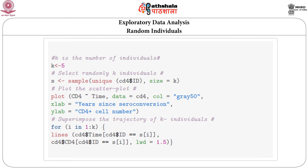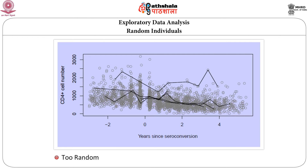A better way is to randomly plot a few individuals. We can specify k, the number of individuals — I have set k equal to 5 — and choose k random samples from the CD4 data, plot the entire dataset, and superimpose the k individuals' trajectories. However, the problem is that since these are k random individuals, the coverage of the total area might not be good. For example, data may exist in regions where the selected individuals do not fall, making this approach too random for a large dataset.